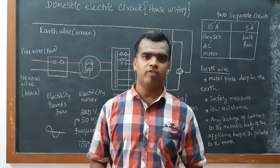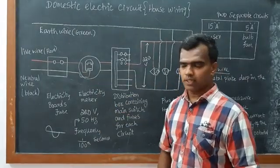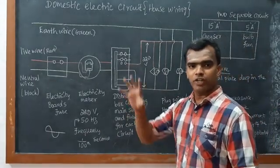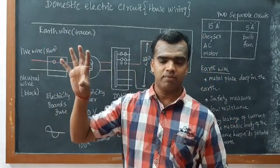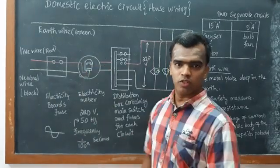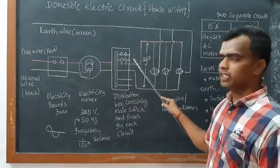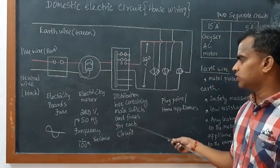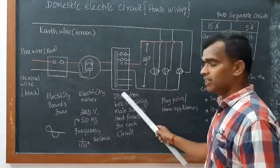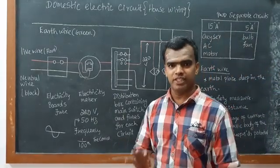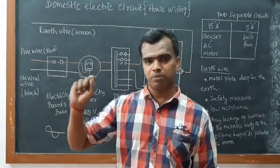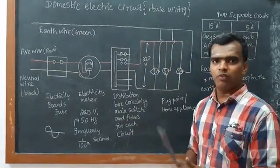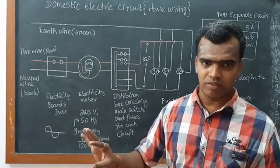From that EB meter, here we have the distribution box in our home. You can see some MCB and the main lines. This is a distribution box containing main switches and fuse for each and every circuit. Remember this is available in your home - you can see some trippers, that is what we are saying MCB. From that tripper box only, the circuit will be separated.